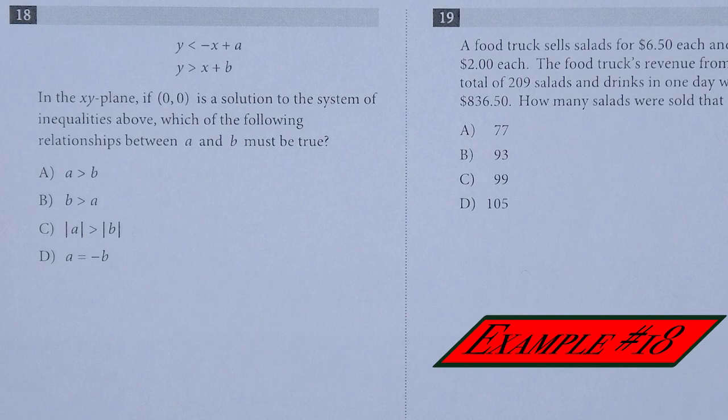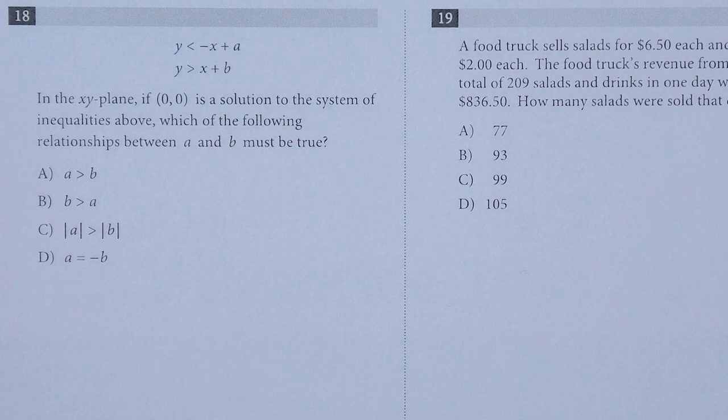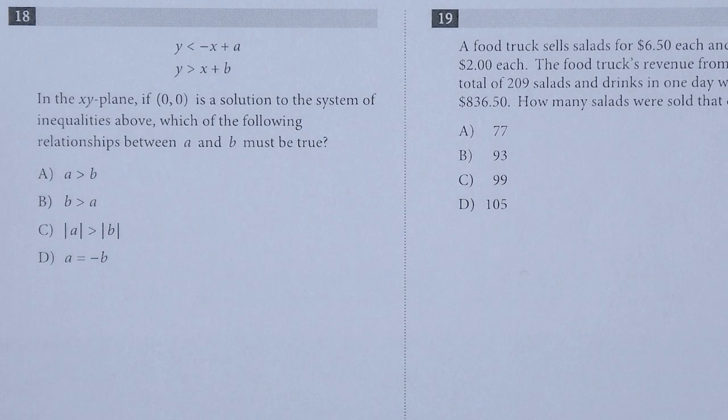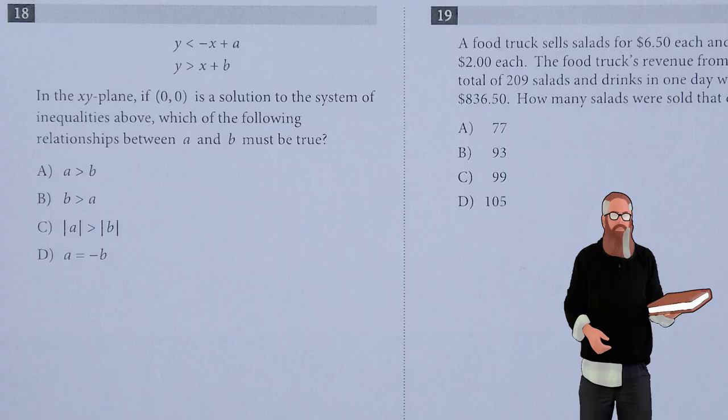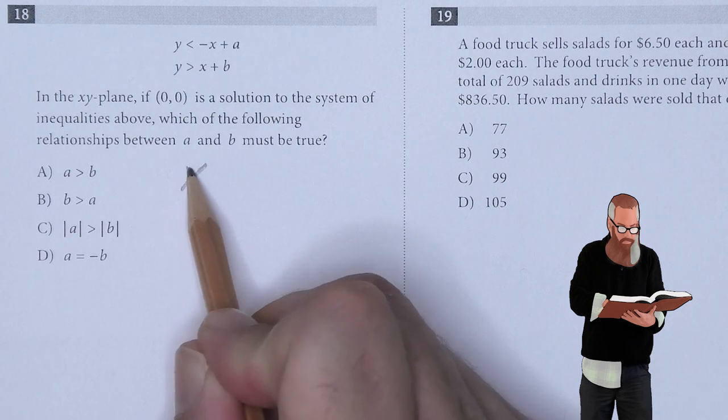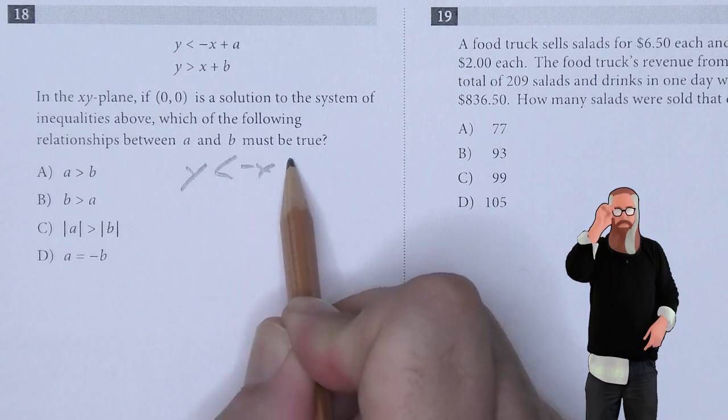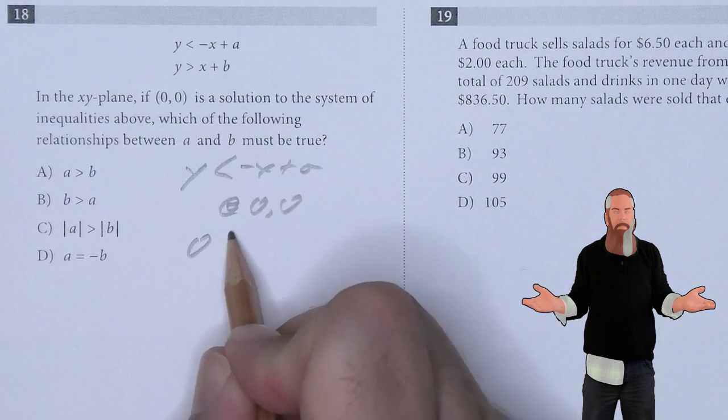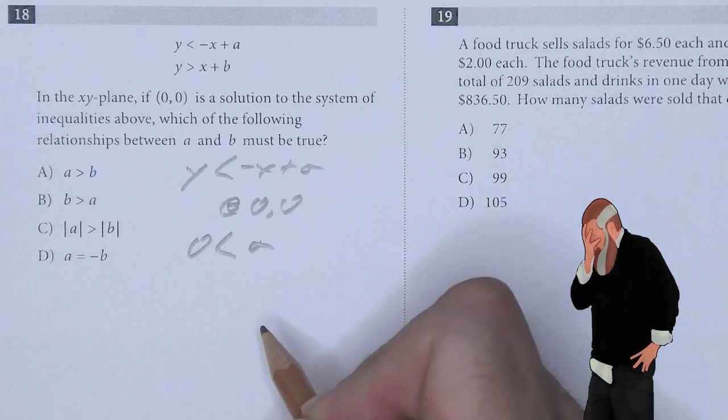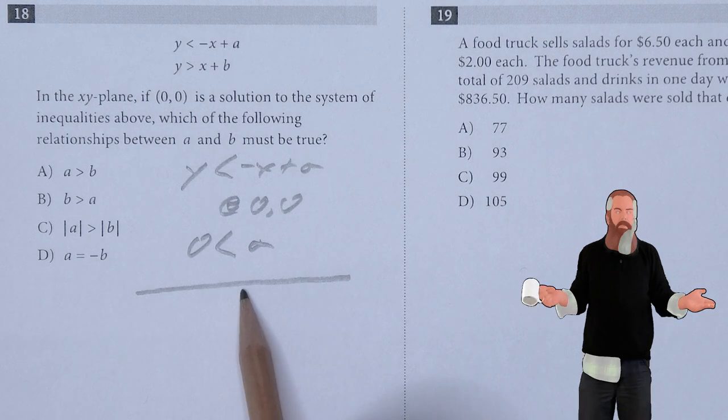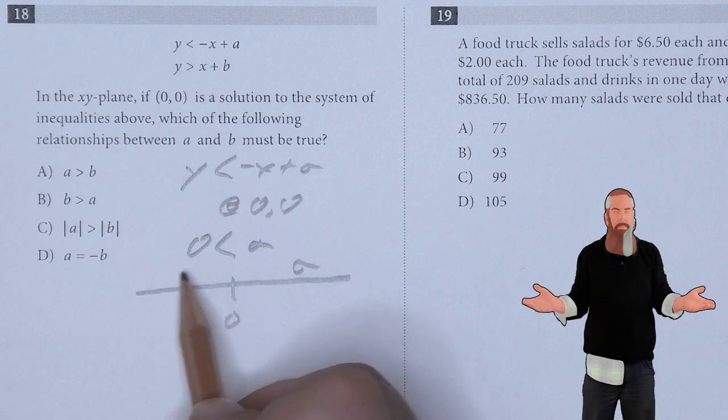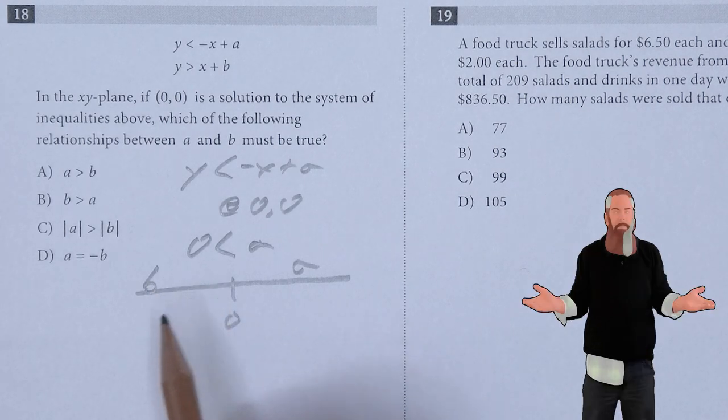In the xy plane, if (0,0) is a solution to the system of inequalities above, which of the following relationships between a and b must be true? If I start by looking at y is less than negative x plus a, and I say at (0,0), which means 0 is less than a. I know that I have a 0 on the line, a is over here on the right, and b is possibly over here on the left.